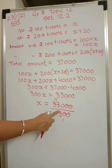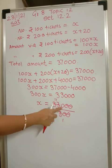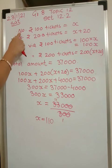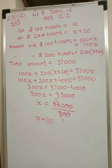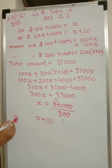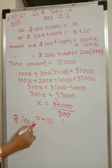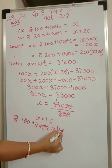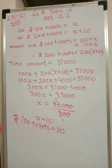Cancelling two zeros gives 330 divided by 3, which equals 110. The number of Rs.100 tickets sold is 110. That means 110 tickets of Rs.100 were sold.